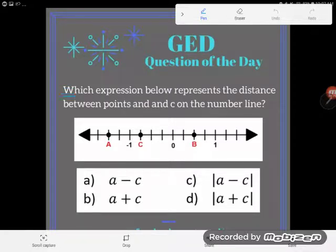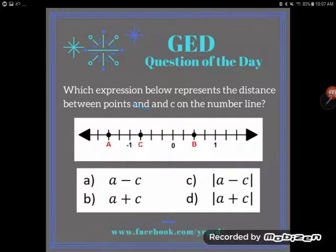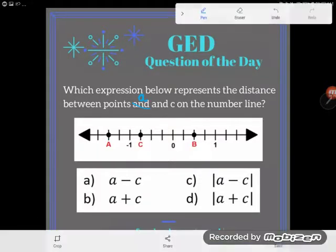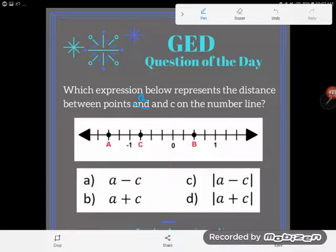It says which expression below represents the distance between points A and C, oh it's supposed to say A and C, typo. Okay, the distance between points A and C on the number line.